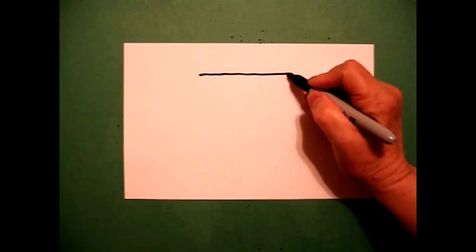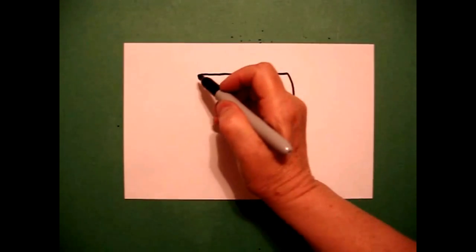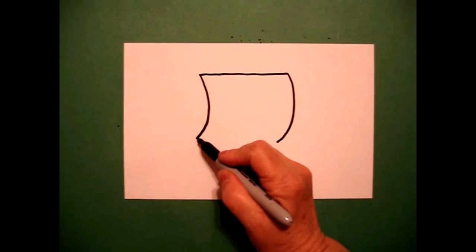I come down to the right and draw a big curve line down, then come to the left and draw another big curve line down. Now I connect the two with a straight line.